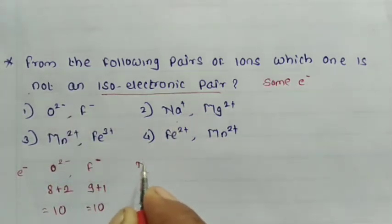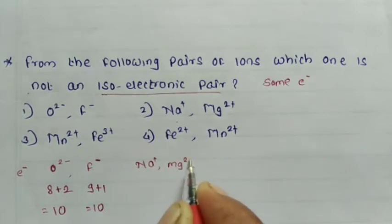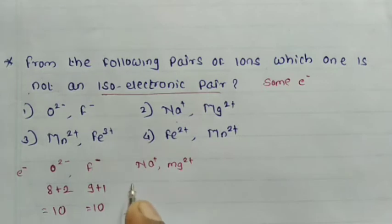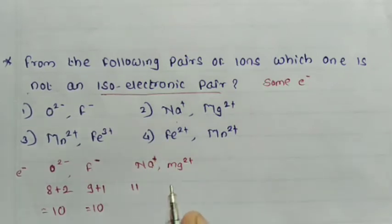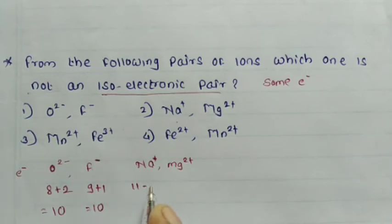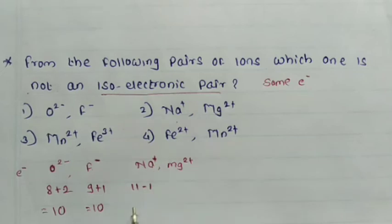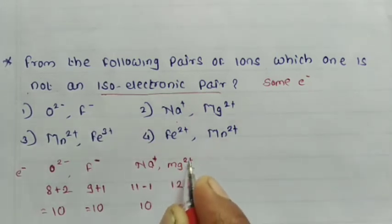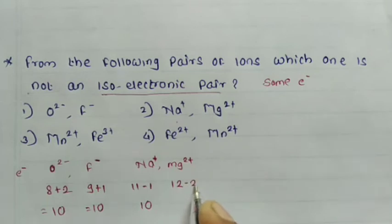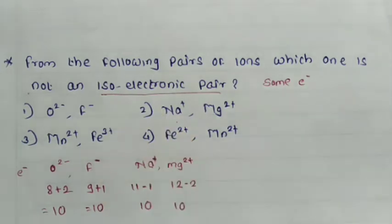See pair 2: Na⁺ and Mg²⁺. Atomic number of sodium is 11. Na⁺ has a 1+ charge, meaning 1 electron is removed: 11 − 1 = 10 electrons. Atomic number of magnesium is 12. Mg²⁺ has a 2+ charge, meaning 2 electrons are removed: 12 − 2 = 10 electrons. Both have 10 electrons — this is also an isoelectronic pair.